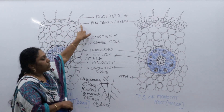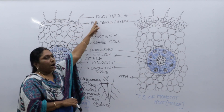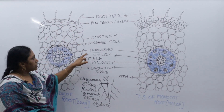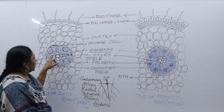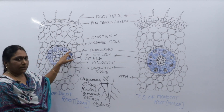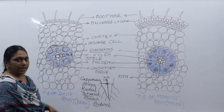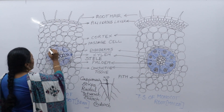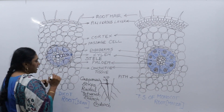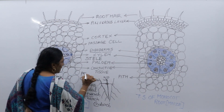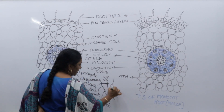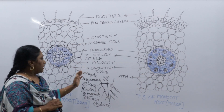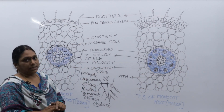So to summarize dicot root: the outer layer is called epiblema or piliferous layer, from where outgrowths called root hairs arise — they are unicellular structures. There is a multi-layered cortex, the innermost layer of which is the endodermis. After the endodermis is the pericycle. Everything inside the endodermis is called the stele, which includes pericycle and vascular bundles.